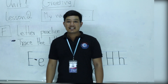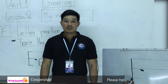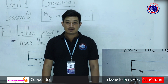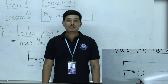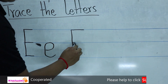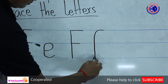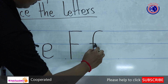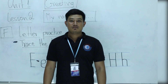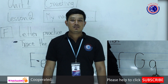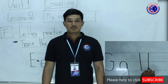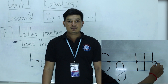Okay. Trace letter E: one, two, three, four. Letter F: one, two, three. Letter G: one, two. Letter H: one, two, three. Good.